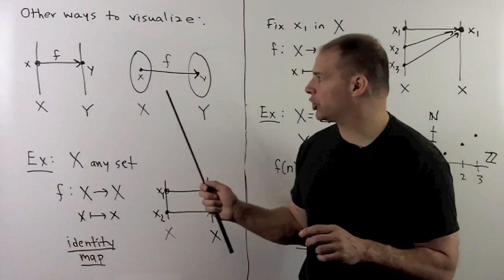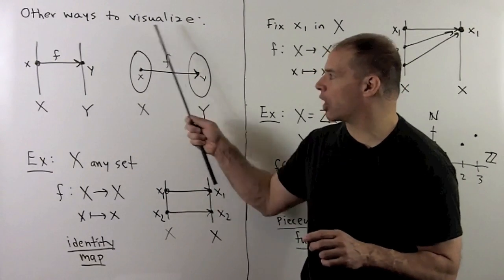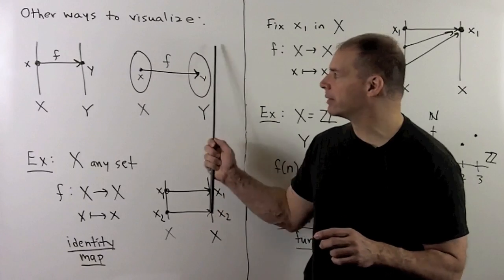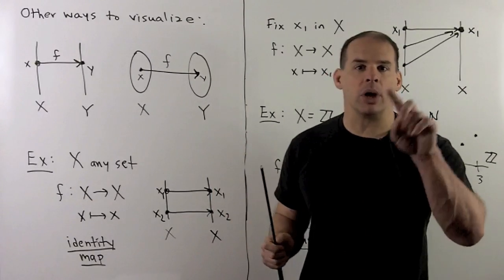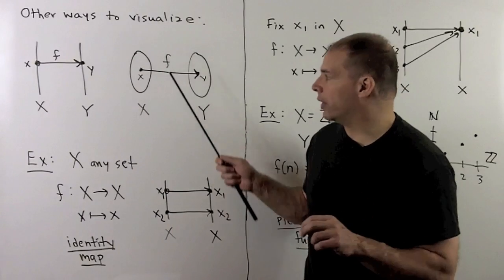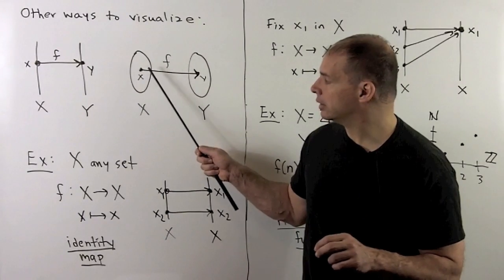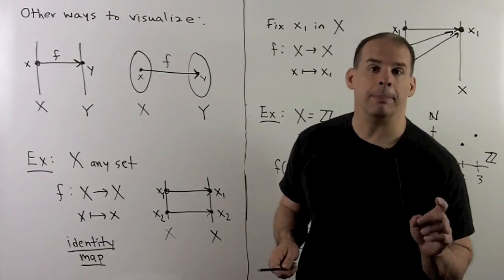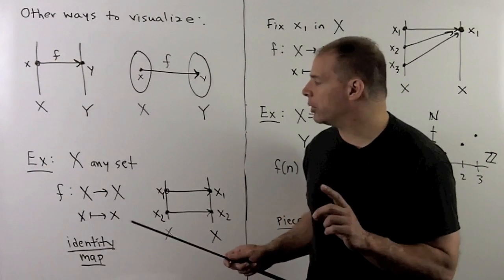A variation on this picture. Instead of using axes, I'll just draw big circles representing our sets. And then this is convenient for when I want to show where subsets get carried to. So, there'll be little islands inside of our circles.